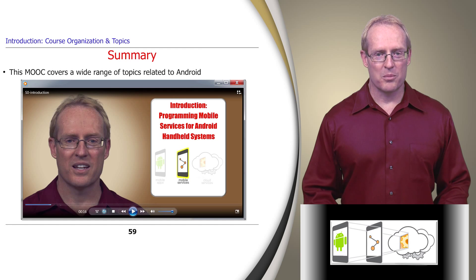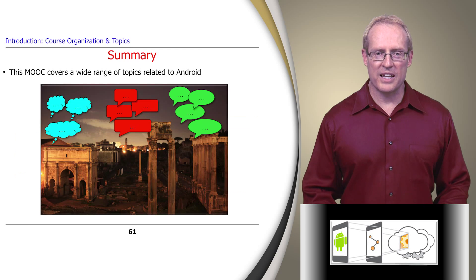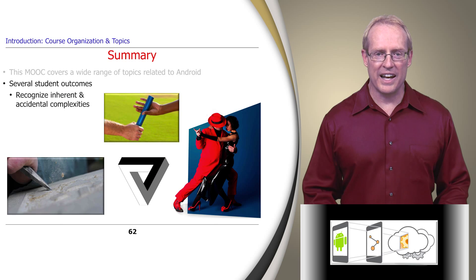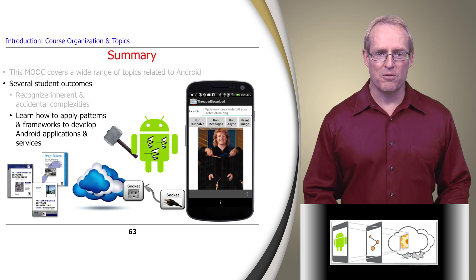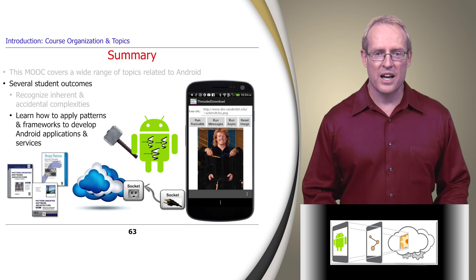After watching the videos, completing the assignments, and participating in the online discussion forums, you should be able to recognize the inherent and accidental complexities involved with developing concurrent software that communicates securely between processes and threads. Likewise, you'll understand how pattern-oriented software architecture and framework techniques can and cannot help to alleviate these complexities. You'll also learn how to apply patterns and frameworks to develop reusable and resilient concurrent applications and services using Java programming language features and Android middleware.